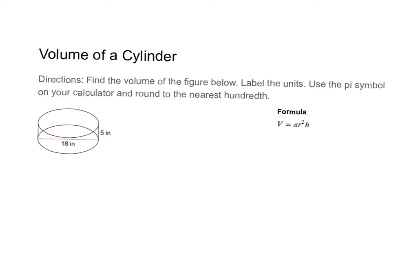Here we want to find the volume of a cylinder and label the units. We want to remember to use the pi symbol on our calculators and round to the nearest hundredths.